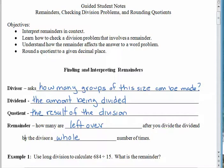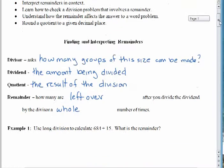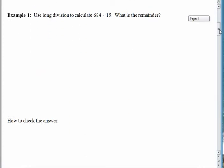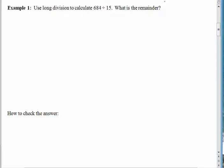So let's scroll up here and take a look at an example. Before we even get into the word problems, let's just review how to work long division. So we'd like to use long division to calculate 684 divided by 15. So we have 684, which is the dividend, the amount being divided. The divisor is 15.